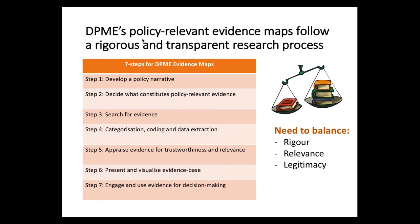There are seven steps behind the DPME evidence maps. Step one is developing a policy narrative, which is not necessarily what you do in a systematic review. Having the policy narrative is the essential outline of how the evidence map can be used in a decision making context. It's a diagnostic of where there's space for an evidence map within current policy debates, and having identified that space, how do you get an evidence map into this space? The step is completely driven by the decision makers themselves, and it then informs all future research steps associated with the evidence map — providing the guideline or framework for the further research steps.